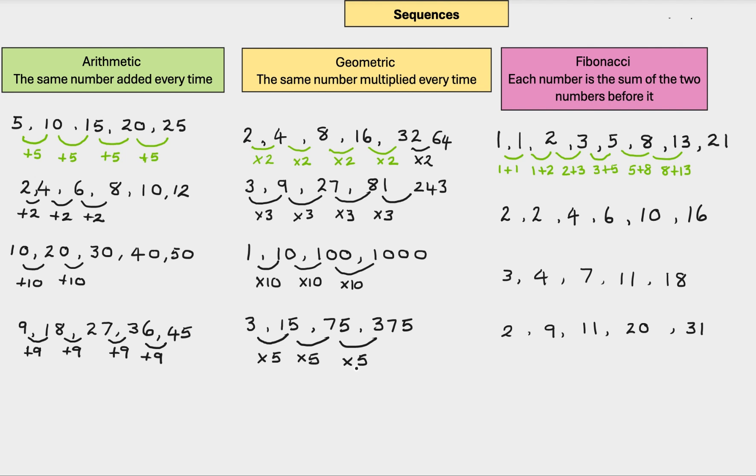So now you have two common sequences. Arithmetic, you add. Geometric, you times. Arithmetic, you add. Geometric, you times. Or multiply.